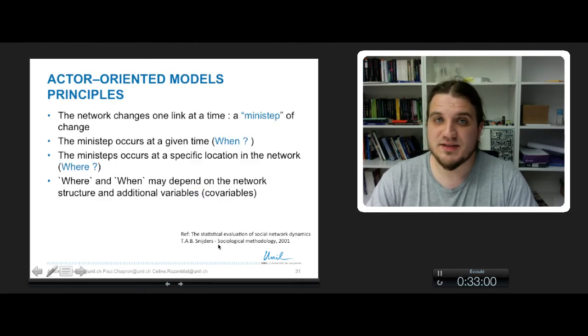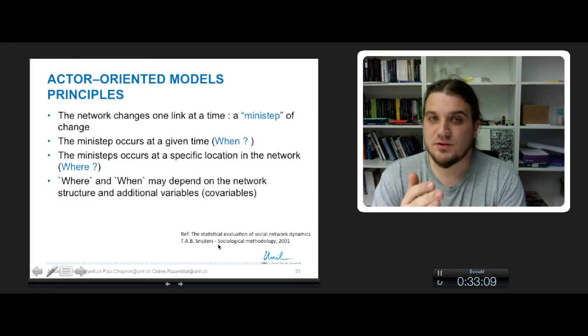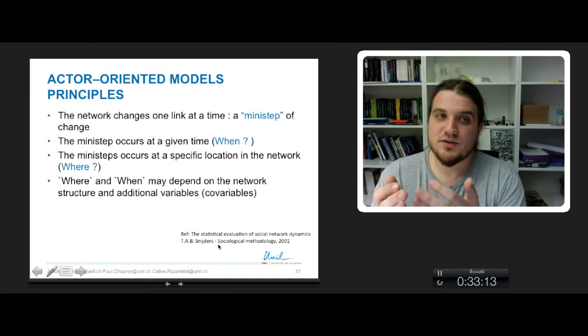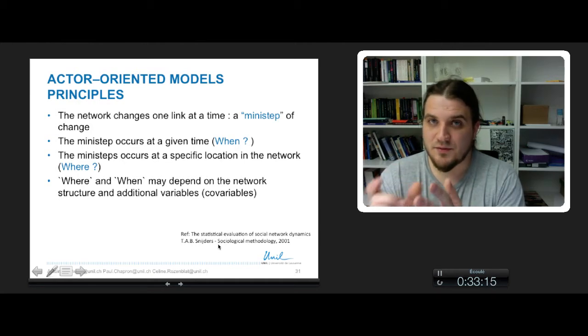There are some principles to this kind of models. We assume that the network changes one link at a time, it's called a mini-step of change, and this mini-step occurs at a given time for a link. So the question is, when does it occur?